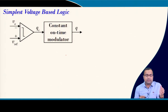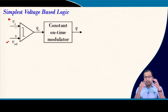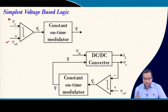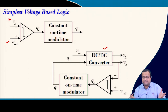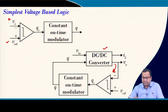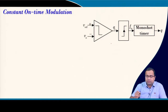Here we consider the output voltage and the reference voltage. Both are compared, and the comparator output Qc goes to the constant on-time modulator. For a single loop feedback control — taking a buck converter as an example, though you can use boost or other converters — the output voltage is directly compared with the reference voltage, and the comparator output goes to the constant on-time modulator.